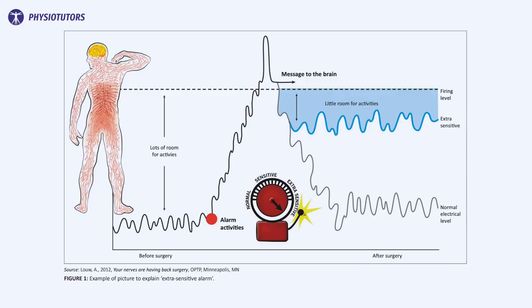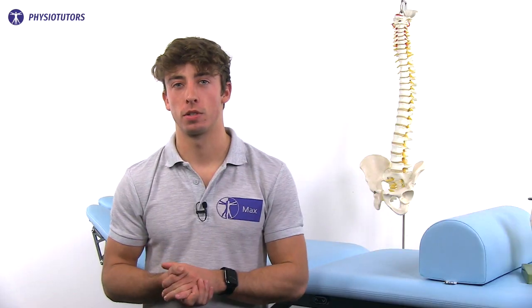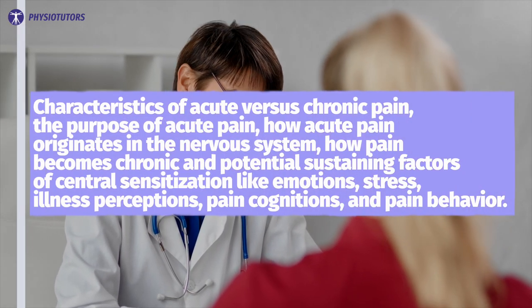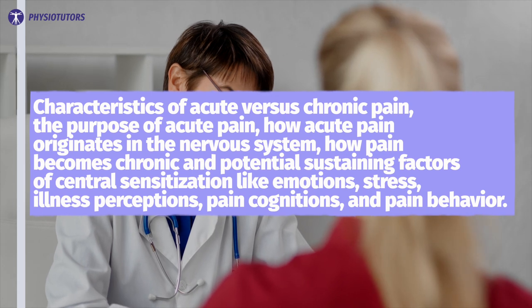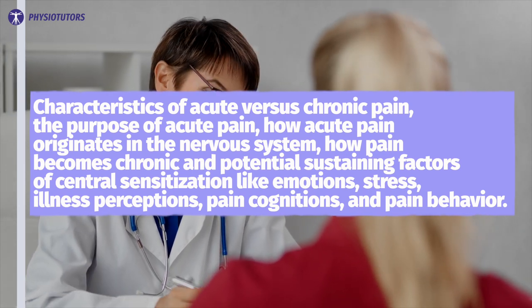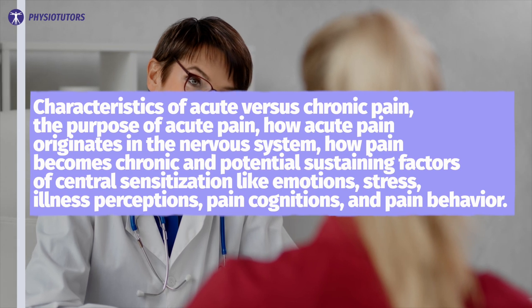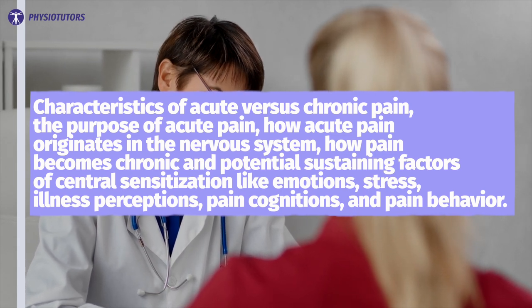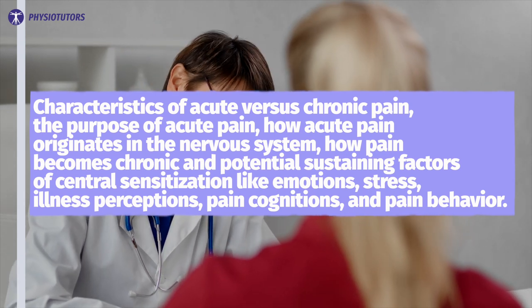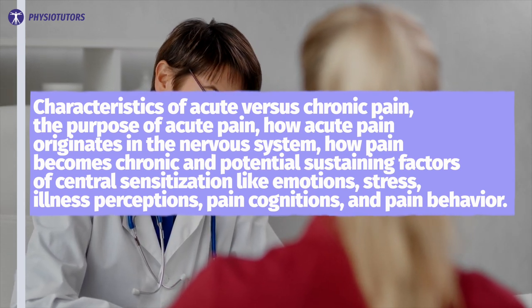Try to explain that, for example, in ongoing whiplash-associated pain, the hypersensitivity of the nervous system is to blame rather than structural cervical damage. Drawings and images might help here. Topics to discuss include characteristics of acute versus chronic pain, the purpose of acute pain, how acute pain originates in the nervous system, how pain becomes chronic, and potential sustaining factors of central sensitization — like emotion, stress, illness perception, pain cognitions, and pain behavior.